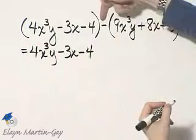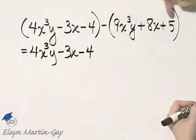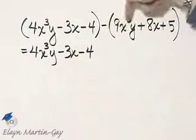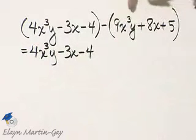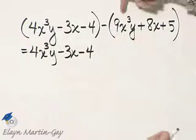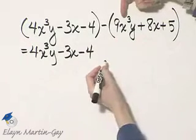Now remember this is the opposite of each term within the second set of parentheses, or if you'd like you can think of it as negative 1 times each term within the set of parentheses. But all of these terms once the parentheses are removed will have a changed sign.